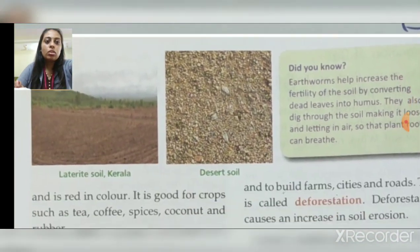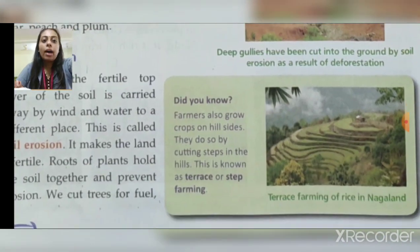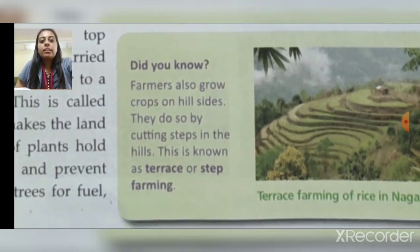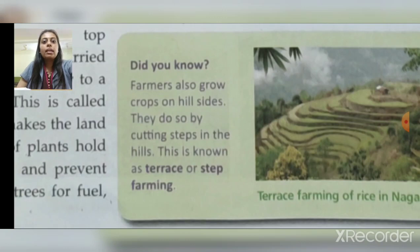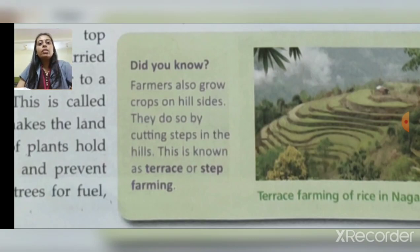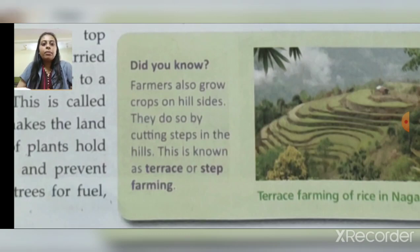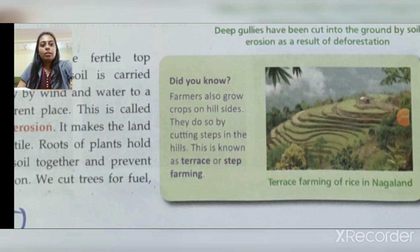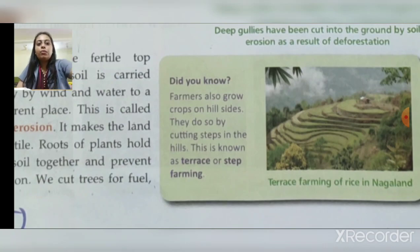Farmers also grow crops on hillsides. They do so by cutting steps on the hills — this is known as terrace or step farming. On slope regions, flat steps are cut and farming is done there, which also prevents soil erosion on hills. Terrace farming of rice can be seen in Nagaland.